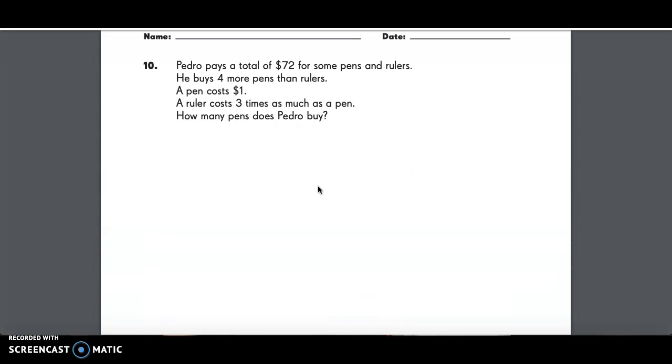Number 10, Pedro pays a total of $72 for some pens and rulers. He buys four more pens than rulers. A pen costs $1. A ruler costs three times as much as a pen. How many pens does Pedro buy?